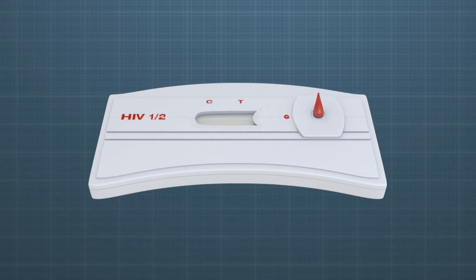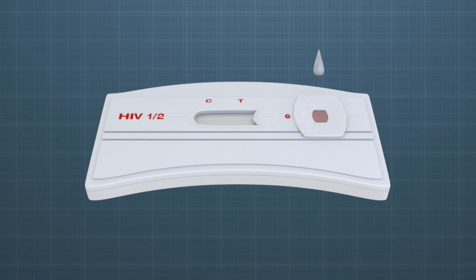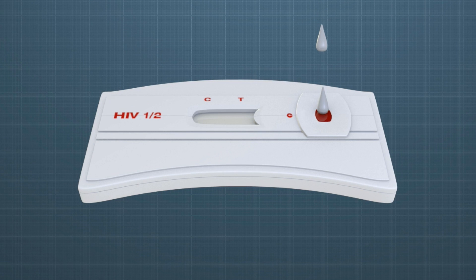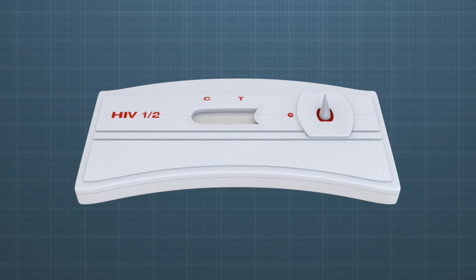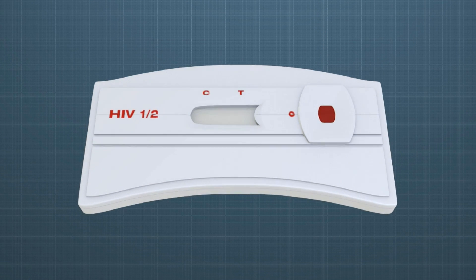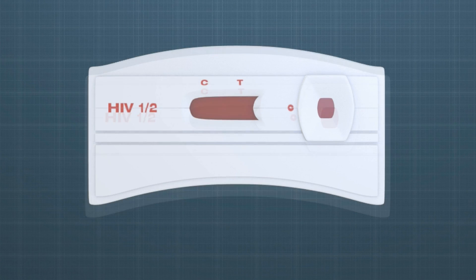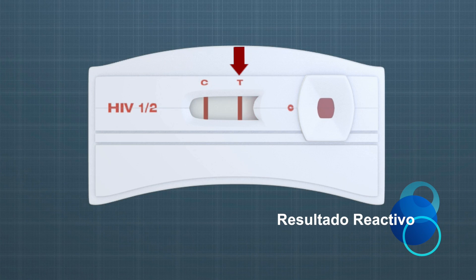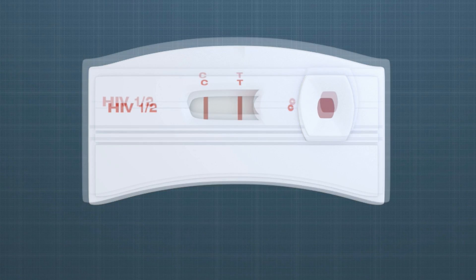La muestra del paciente migra a través de la membrana que tiene fijados los antígenos de VIH o Treponema pallidum, según sea el caso. Si los anticuerpos están presentes en la muestra, se formará un complejo antígeno-anticuerpo. Esta unión se manifiesta por la aparición de una línea visible en la zona de la membrana correspondiente a la región de la prueba.